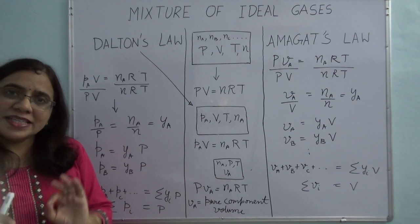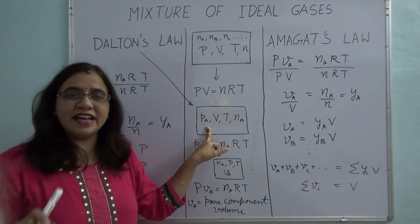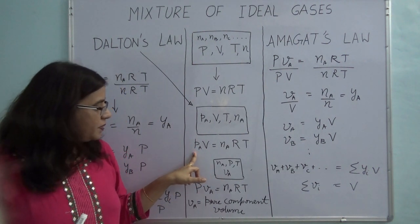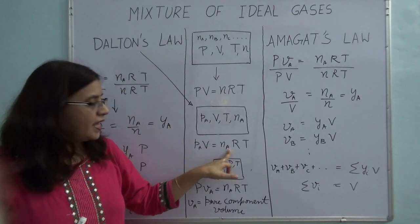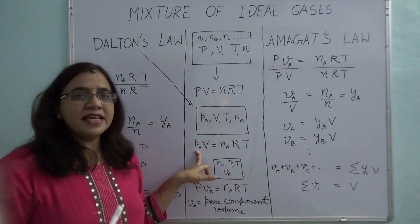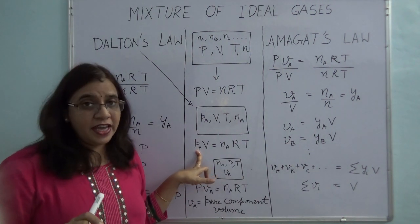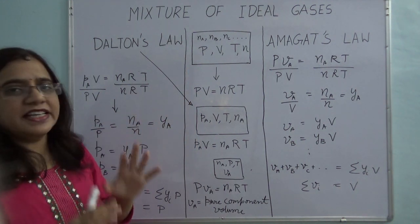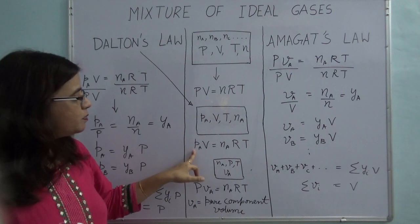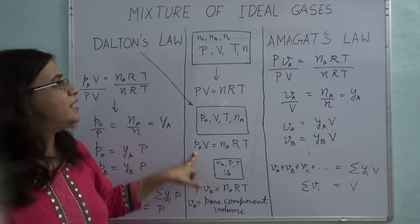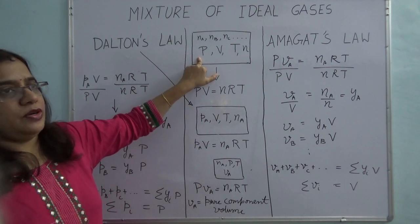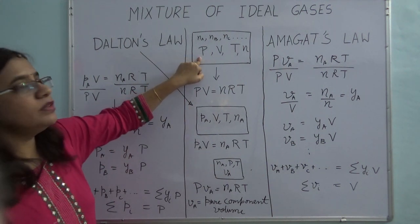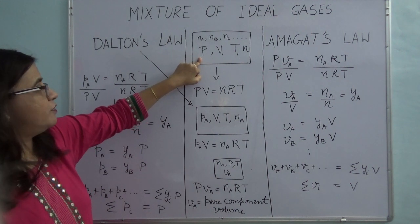Since A is an ideal gas, we can write the ideal gas equation for this situation as well. Writing it down: PA × V = Na·RT. This PA is the partial pressure of A, and from our knowledge of ideal gas, this pressure will be less than the mixture pressure. I have written down the ideal gas equation for this case and for the mixture as well.